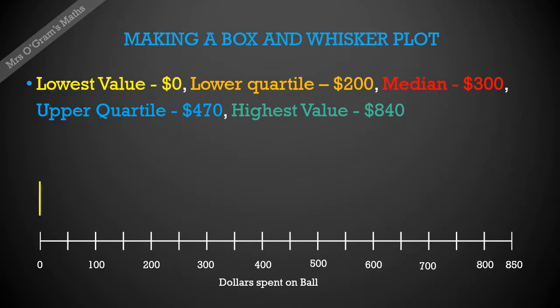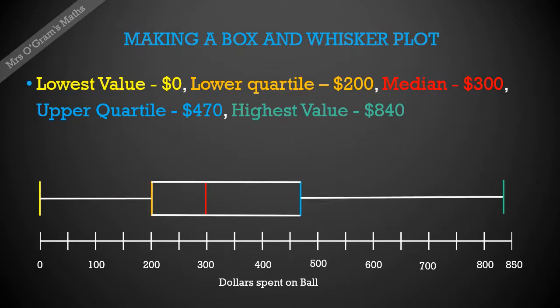Our lowest value goes in at zero. Highest was 840. The lower quartile goes in at 200, and we've got the median and upper quartile as well. Those are all the values we want to put in, and then we draw it in as a box with whiskers, just like this.